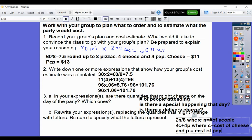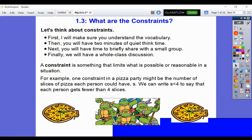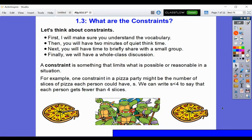Moving on to the last portion of our lesson. What are constraints? So a constraint is something that limits what is possible or reasonable in a situation. So for example, one constraint in a pizza party might be the number of slices of pizza each person should have, S. We can write that S is less than 4 to say that each person gets fewer than 4 slices. So that would be our constraint.